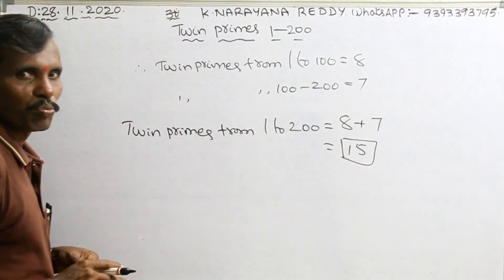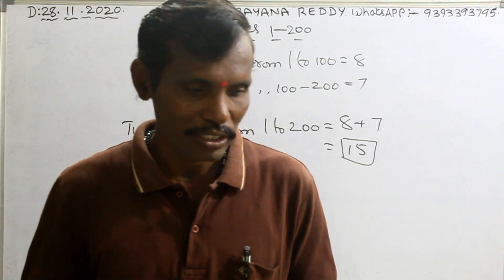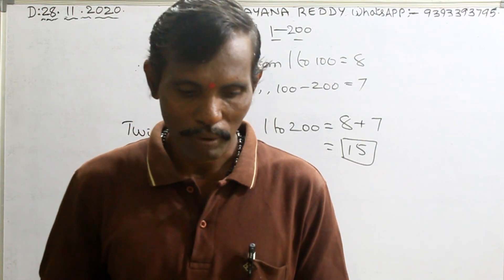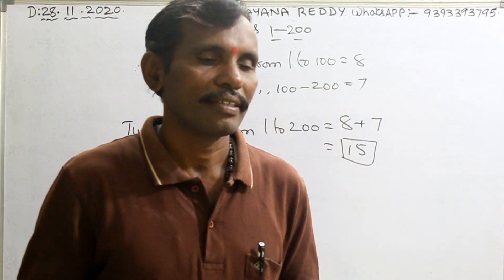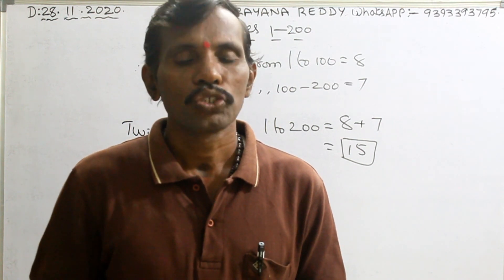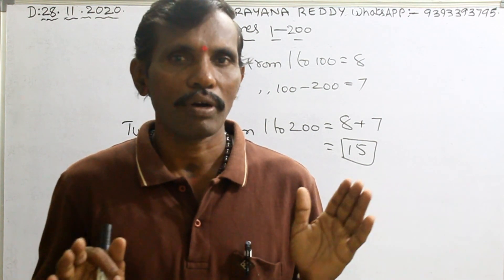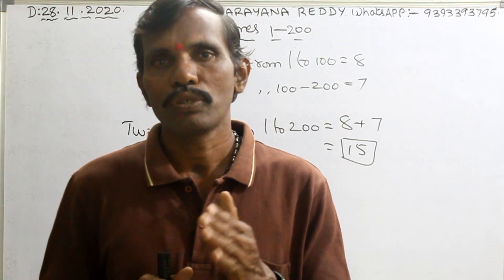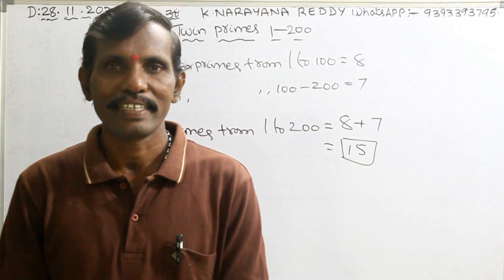These are very important for competitive exams and also for school-level education. Please practice these twin primes from 1 to 200 and remember them carefully. To summarize: twin primes have a gap of 2, the form is (P, P+2), and the second form is (6n−1, 6n+1). Please subscribe, like, and share. Thank you.